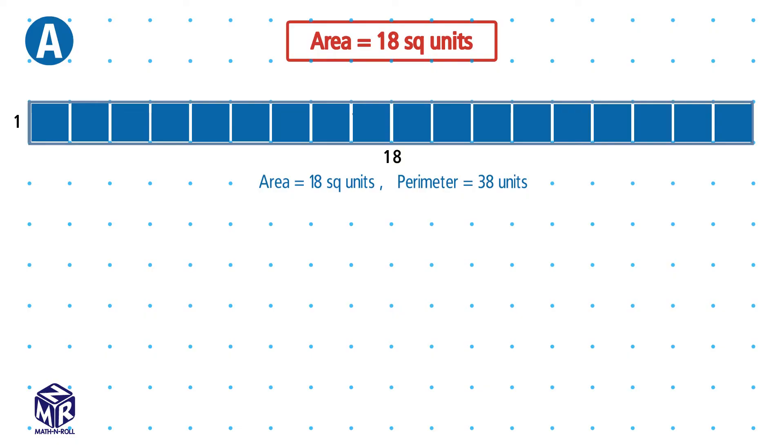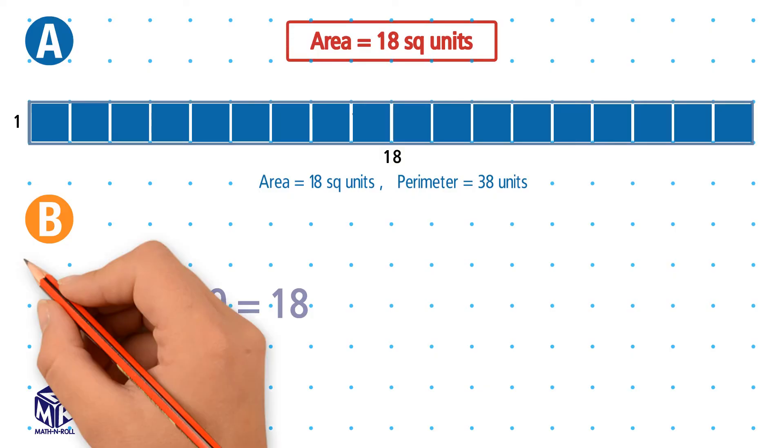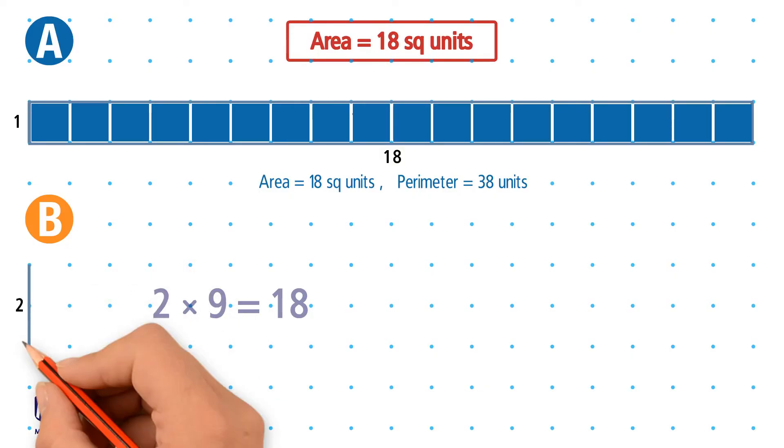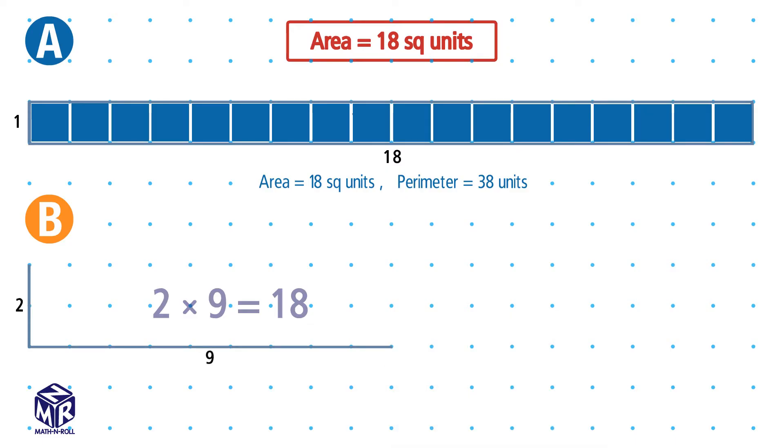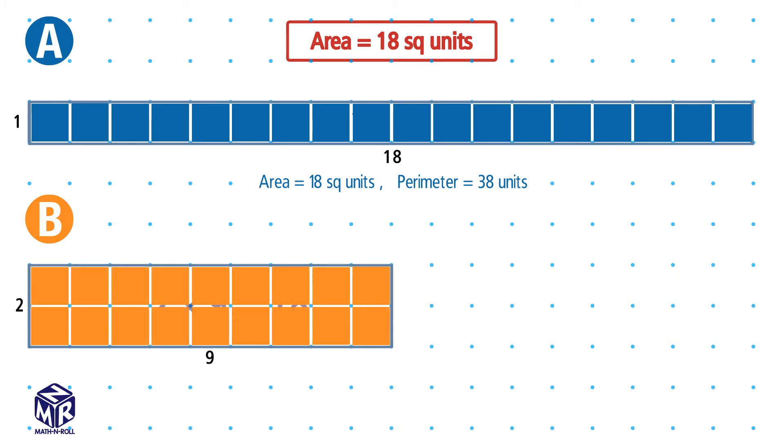Now let's use another sentence from the multiplication table. 2 times 9 equals 18. This means that one side will be 2 and the other side will be 9. The opposite sides are equal. Now check the area. The area is 18 square units.